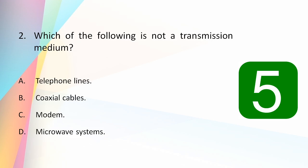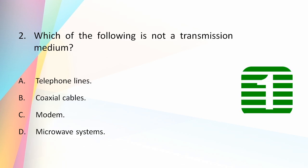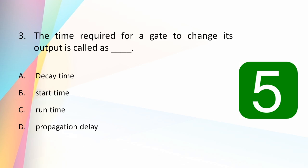Which of the following is NOT a transmission medium: telephone lines, coaxial cables, modem, or microwave systems? The answer is modem. Modem stands for modulator and demodulator, and it is used to get an internet connection from the hub — hence it does not serve as a transmission medium.